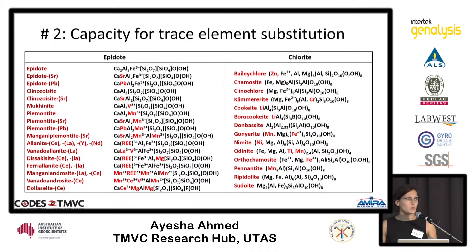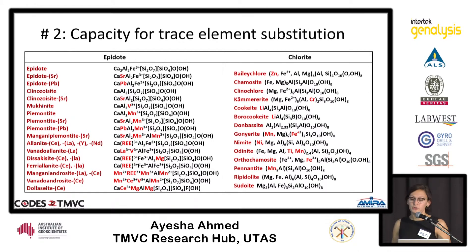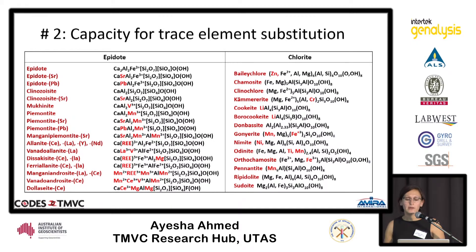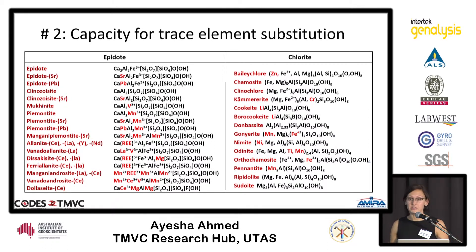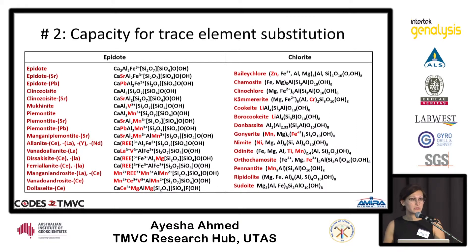The second reason we choose epidote and chlorite is that, similar to apatite, they have a really high capacity for trace element substitution. Shown in red are all the different trace elements that can substitute into the epidote and chlorite structure — not just in trace element concentrations but up to weight percent. Not shown are all the elements that can also substitute into the structures at the tens, hundreds, and thousands of ppm level.